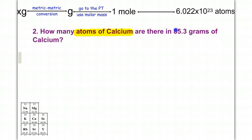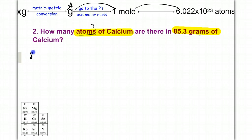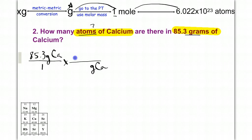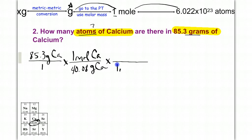Find atoms of calcium if you're given 85.3 grams of calcium. We're starting at grams and need to end up at atoms — two steps: grams to moles, then moles to atoms. Put 85.3 grams of calcium over 1. Going from gram to mole, it's always one mole, so we put one mole of calcium on top, and use the molar mass from the periodic table — 40.08 grams — on the bottom. We're not finished because we still need to get to atoms, so bring down one mole of calcium.